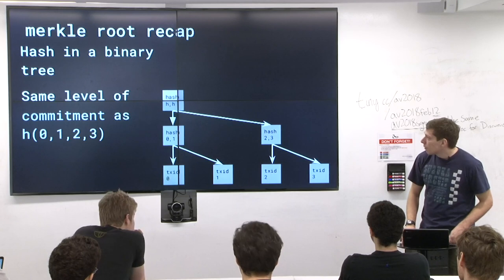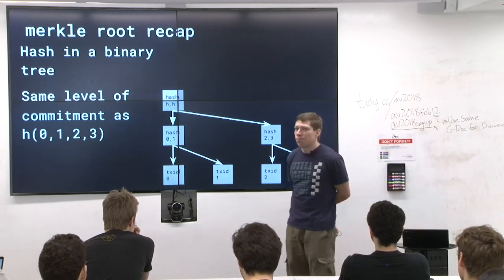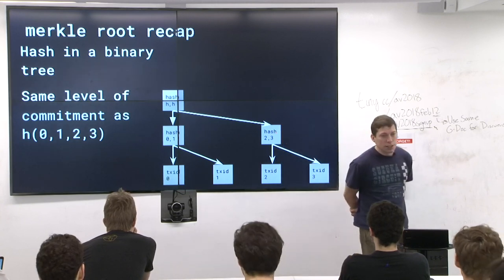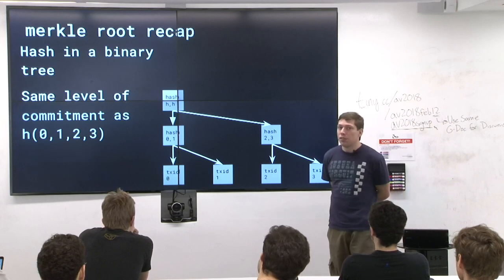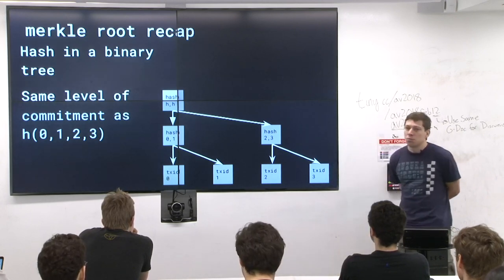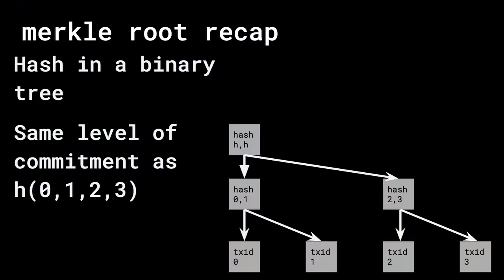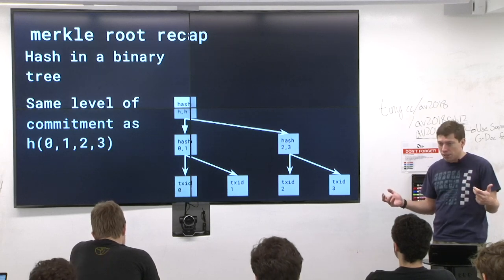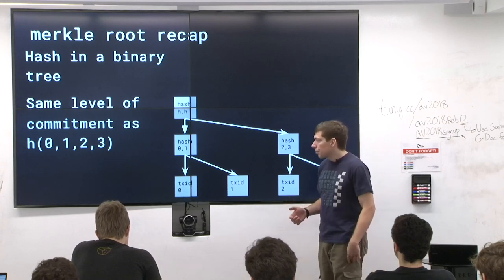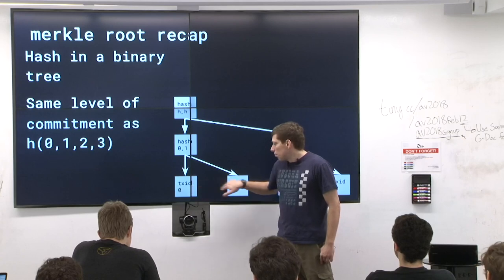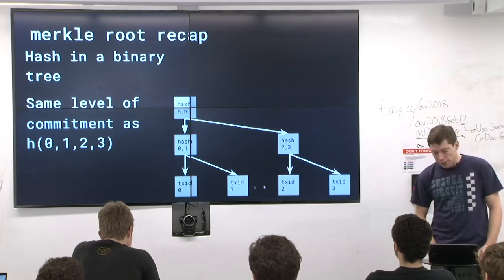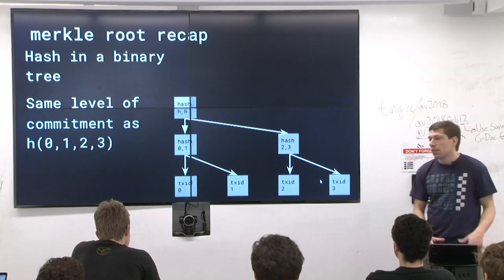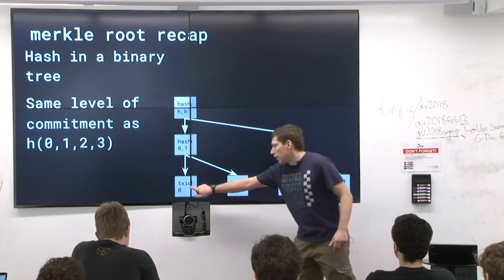We use a Merkle root instead of just concatenating all the transactions and hashing them together — you could do that and it would work, but a Merkle tree lets you prove a transaction was in a block without giving the whole block. You take TX IDs — a transaction ID is just a hash of the transaction — hash two together to get an intermediate point, and continue up to the root. You can't change any transaction ID without changing the Merkle root, so it commits to all the transactions.